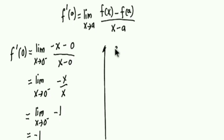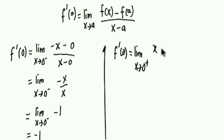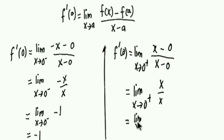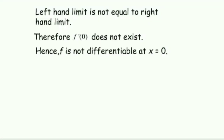For the right-hand limit, as x approaches 0 from the right, we use the function x. We compute [x minus f(0)] over [x minus 0], which simplifies to x over x, equaling 1. So the right-hand limit equals 1. Hence, the conclusion is: the left-hand limit is not equal to the right-hand limit, therefore f'(0) does not exist, and f is not differentiable at x equals 0.